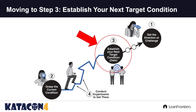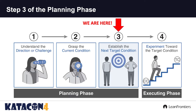Here we are on step three: establishing your next target condition. What you're trying to do is describe what you're striving for next — how you want the focus process to be operating in the near future and in the direction of the challenge. The target condition is agreed upon between the learner and the coach through back-and-forth dialogue, maybe a little negotiation, and it's an iterative process. The key thing is that at this moment you have the opportunity to create an environment where the learner can increase their self-efficacy.